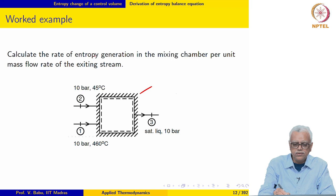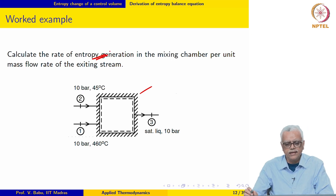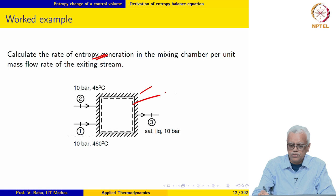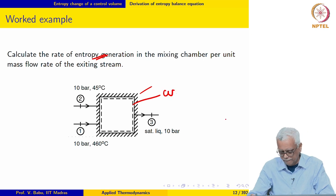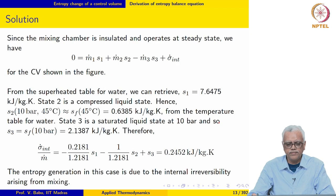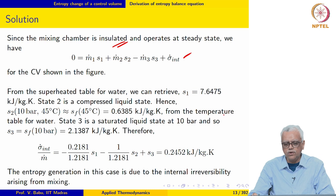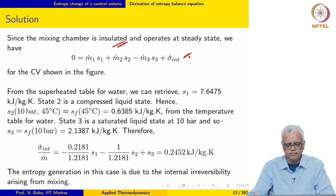Now we want to calculate the rate of entropy generation in the mixing chamber — we want to calculate σ̇_int for this device. The control volume is shown. We apply our previous equation. Since the mixing chamber is insulated, δq = 0, so the integral drops out and we are left with an expression like this.